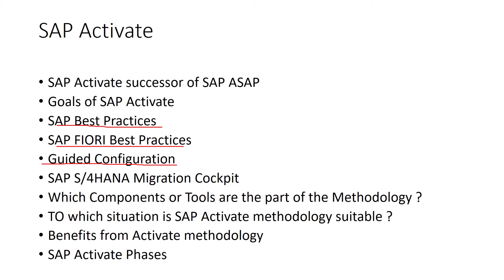Guided configuration is a completely new approach to implementing a software system, introduced with SAP S/4HANA for the first time. In the long run, guided configuration will replace customizing tools such as Implementation Guide (IMG) nodes, which were introduced in SAP R/3. Like the IMG, guided configuration can be used during the initial implementation phase or later when new functions are installed and activated. The role concept and user interface concept in guided configuration are based on SAP Fiori.